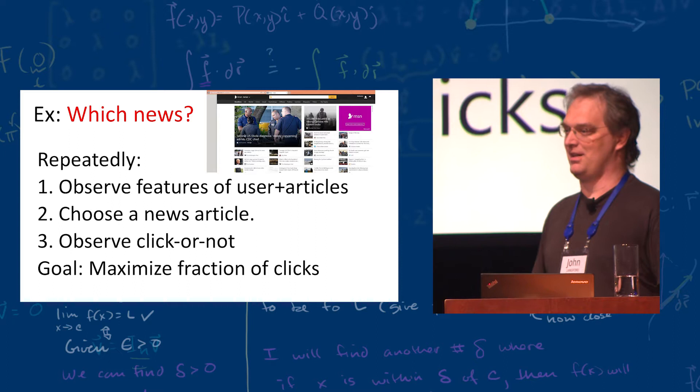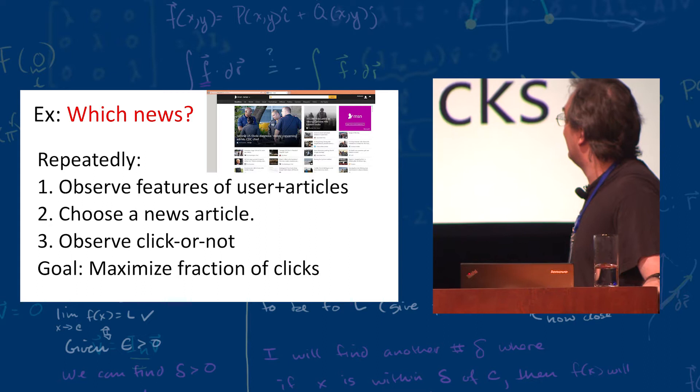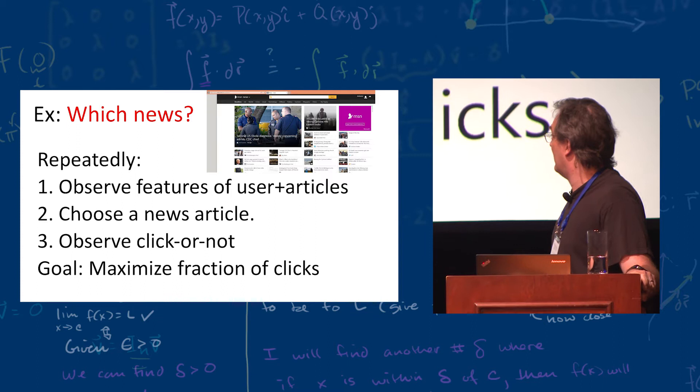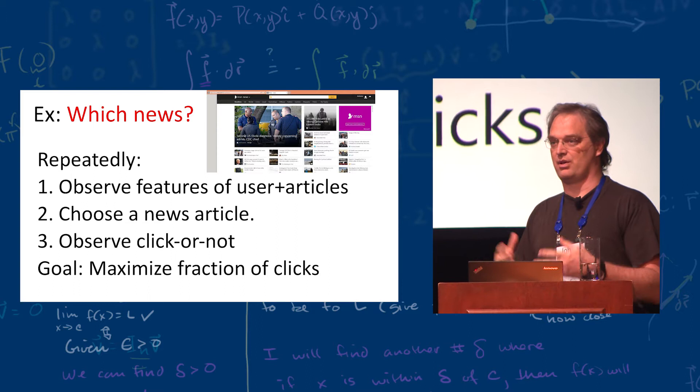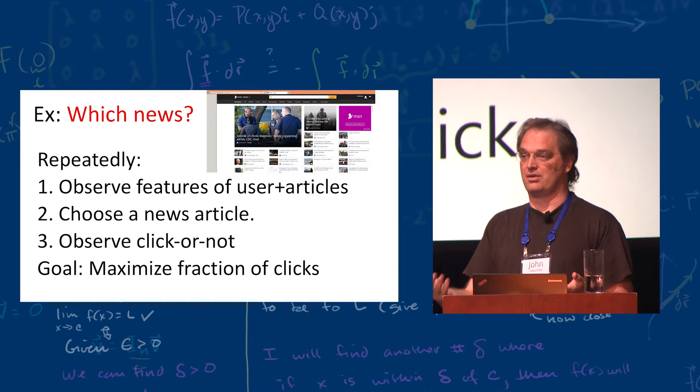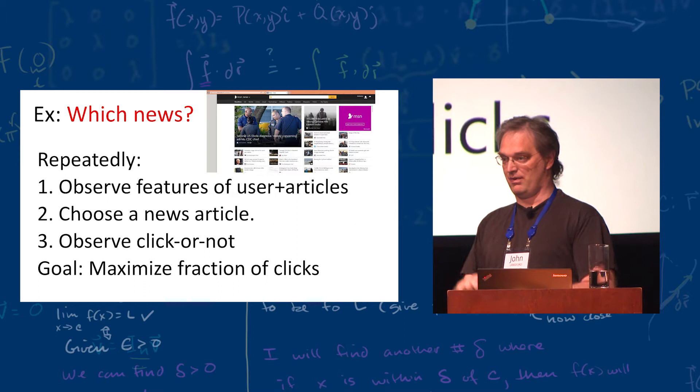This is a problem that MSN News — Microsoft News — has. They wanted to personalize the choice of news article displayed to users. You observe a user, you have some articles in a pool, you choose which one to display, and then you observe whether or not there's a click. Your goal is to maximize the number of clicks. It's a very straightforward thing.